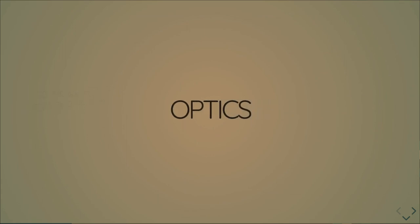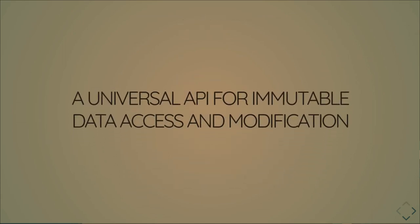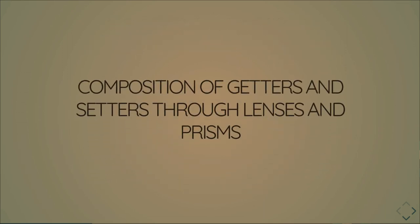I'm going to talk about optics. Optics is the general umbrella term for all of the things we're talking about — lenses, prisms, folds, traversals, all that kind of stuff. Really what it is, it's a universal API for dealing with immutable data, both extracting data from it and modifying it, obviously without mutating it. We go about this by composing getters and setters through lenses and prisms.